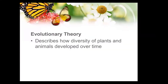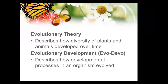First we need to understand a little background information on what evolution theory is and what it does. It describes the diversity of plants and animals developed over time — from one type of plant to another. There's also something called evolutionary development, shortened as evo-devo, which describes how the development process in an organism evolved. It's a subset of that — how did a particular organism get to be the way it is, where the broader picture of evolution theory is how did amoeba turn into elephants.